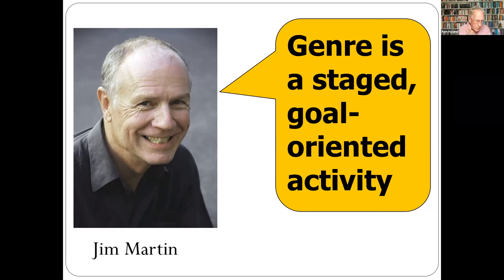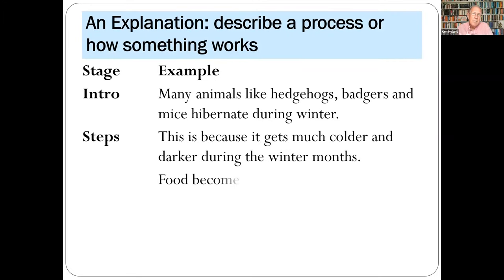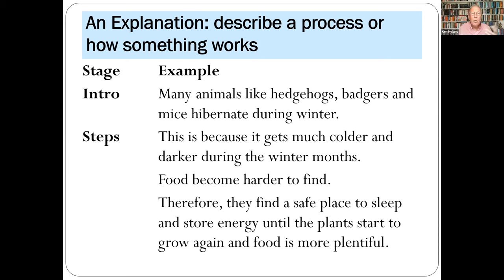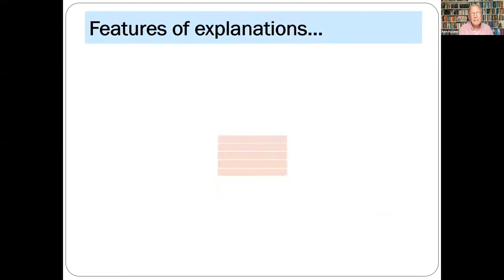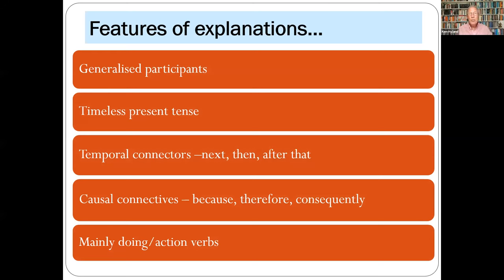Two examples are the explanation and instruction genres. An explanation is a text which describes a process — like the water cycle or how a light bulb works. Written by a primary school student in the UK, it shows the structure of a simple explanation: a general statement introducing the topic, then a series of logical steps explaining how or why something occurs. In explanations we're likely to see generalized non-human participants, the timeless present, temporal and causal connectors, and a lot of action verbs.